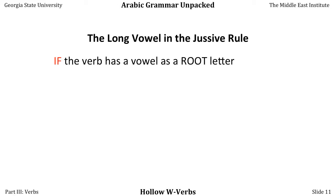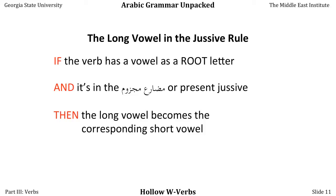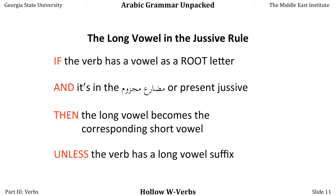There's an IF-THEN statement here. IF the verb has a vowel as a root letter — so irregular verbs like DHAHABA or DARASA are not going to apply, but hollow verbs where one of the root letters is a vowel will apply — AND it's in the MUDARIT MAJZUM after LEM or in a command, THEN the long vowel becomes the corresponding short vowel. So the WAW in YAQUL becomes the DHAMMA — YAQUL — unless the verb has a long vowel suffix. This rule really does take a long time to get used to, but understanding it clearly will make learning and speaking the language a lot more fun.